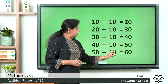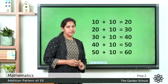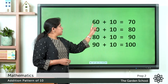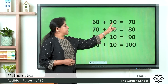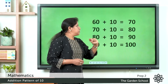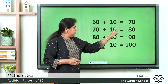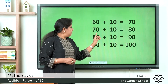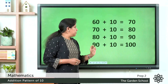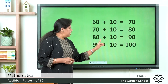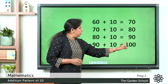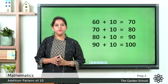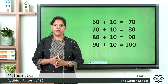50 plus 10 is 60. 60 plus 10 is 70. 70 plus 10 is 80. 80 plus 10 is 90. 90 plus 10 is 100. This is the addition pattern of 10.